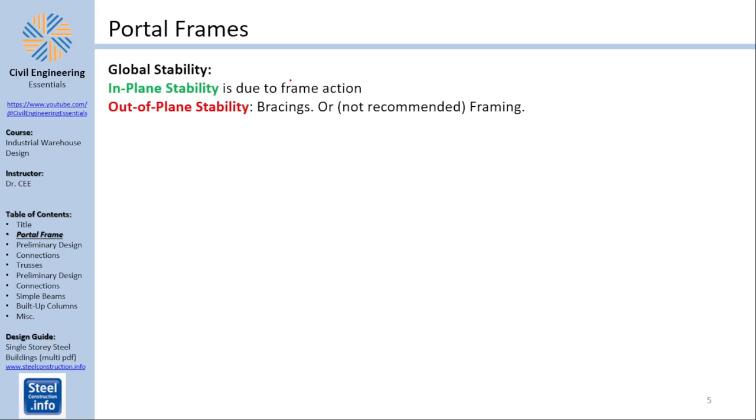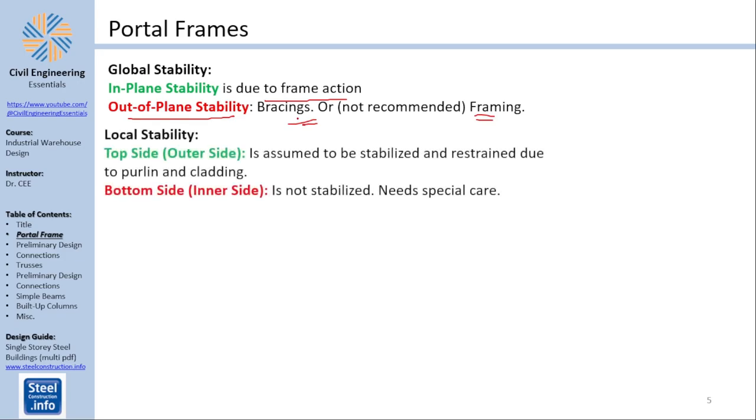There is global stability and local stability. The global stability of the structure in plane is achieved due to the frame action, and out of plane must be achieved by bracing or even by framing, but bracing is usually the way to go. So this is how you do the global stability.